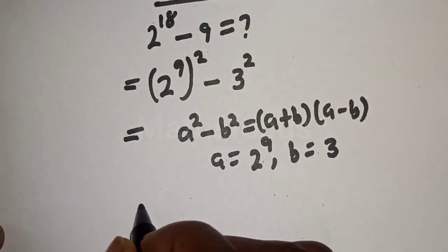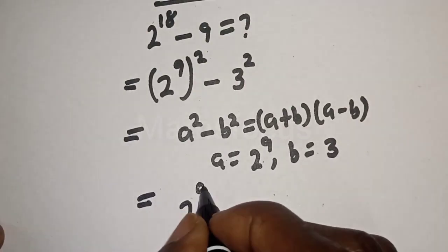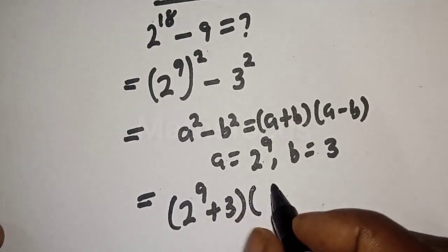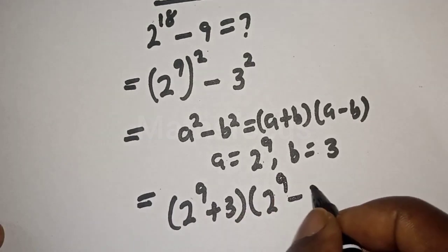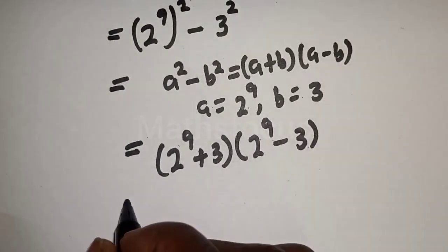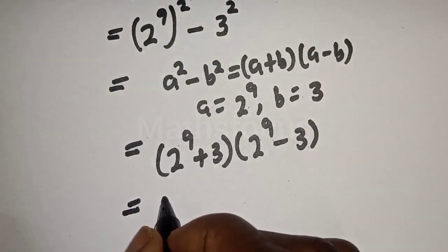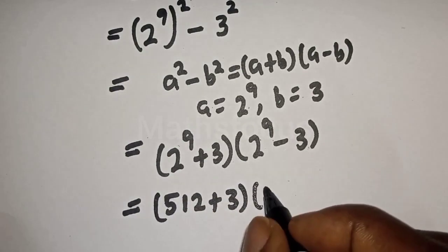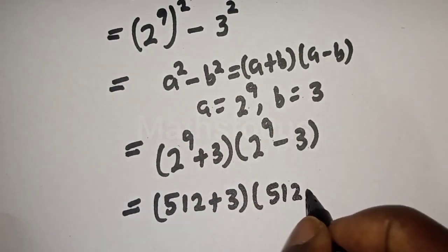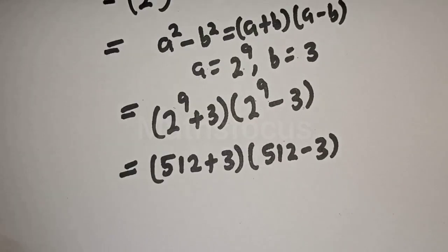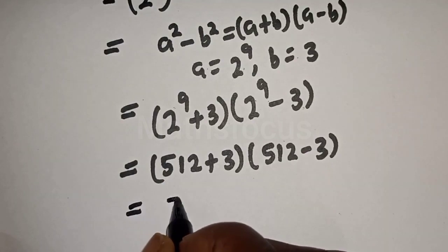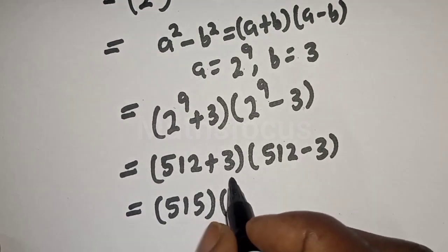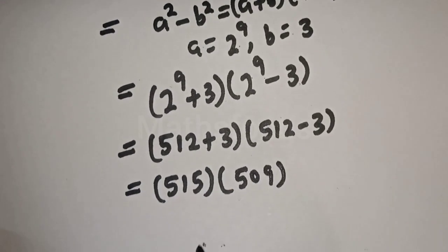Let's see, this is equal to 2 raised to power 9 plus 3 bracket 2 raised to power 9 minus 3. And this is equal to 2 raised to power 9 is 512 plus 3 bracket 512 minus 3. Then 512 plus 3 is 515 bracket 512 minus 3 is 509.